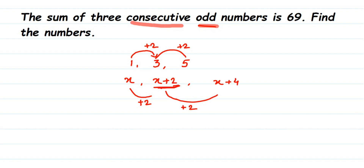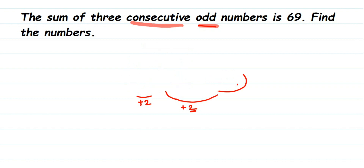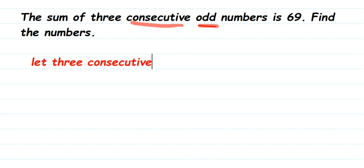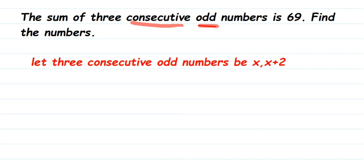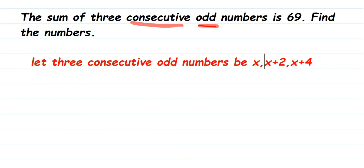So x, x plus 2, and x plus 4 will be three consecutive odd numbers. We're going to form a linear equation and solve it. Let the three consecutive odd numbers be x, x plus 2, and x plus 4.